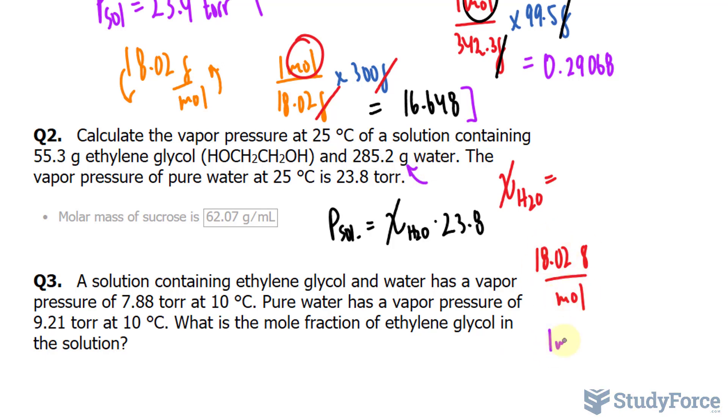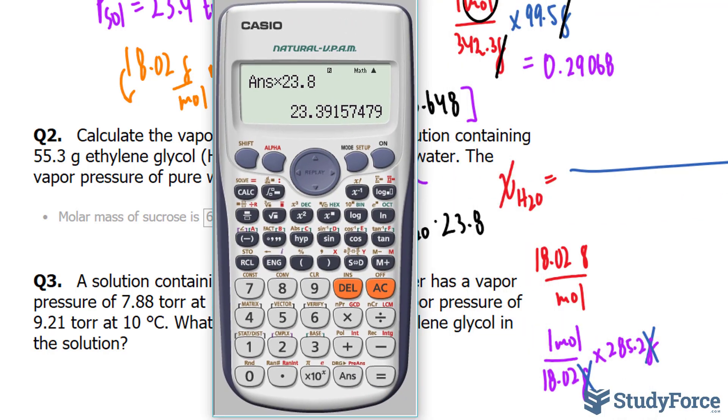So I'll flip this around, one mole per 18.02 grams, multiply that by 285.2 grams. This unit and this unit will cancel out, so at the top of my formula, I'll have these two divided. Let me go ahead and do that right now.